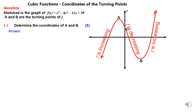At the two turning points, the gradient is always zero. From increasing to decreasing, the gradient becomes zero before the graph changes from increasing to decreasing or from decreasing to increasing. So basically, in short, at the turning point, the gradient is always equal to zero.